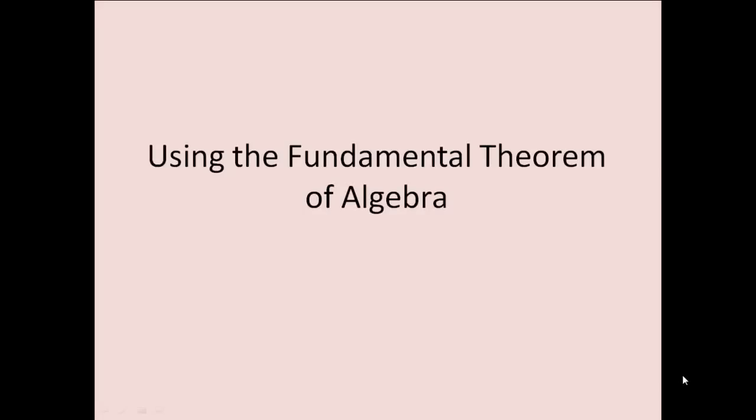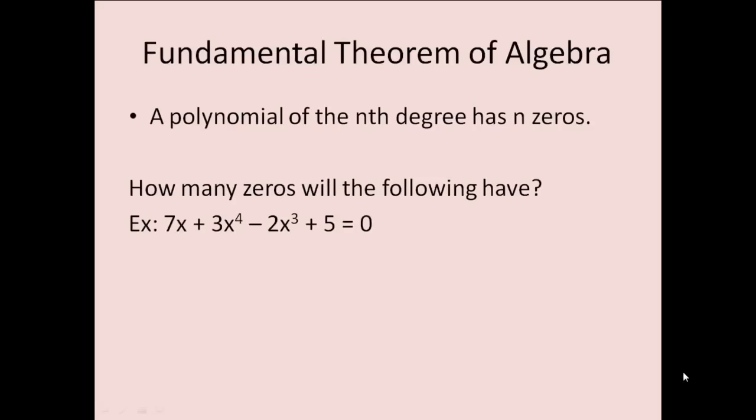We're going to look at the fundamental theorem of algebra. The fundamental theorem of algebra tells us that a polynomial of nth degree has n zeros. So if we have this example, 7x + 3x^4 - 2x^3 + 5, if we want to know how many zeros we're going to be looking for, we first need to find our degree. And remember, our degree is our biggest exponent, so in this case our degree would be 4. That tells us we're going to have 4 zeros.